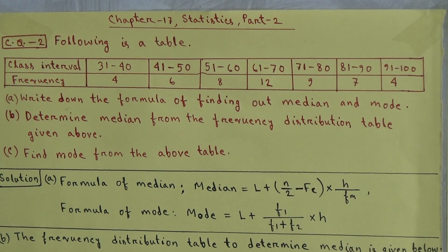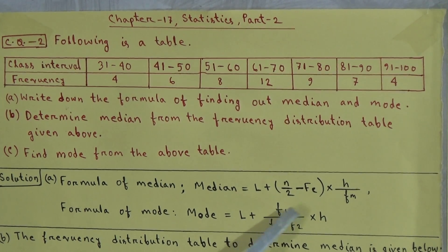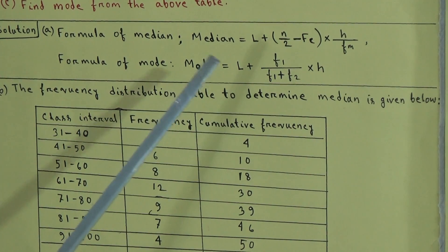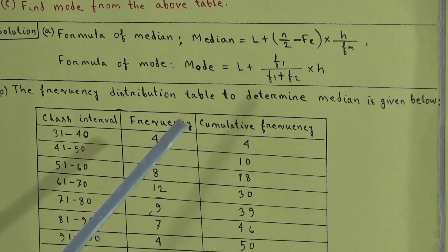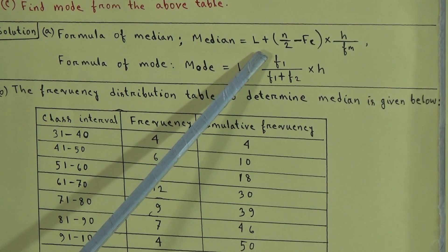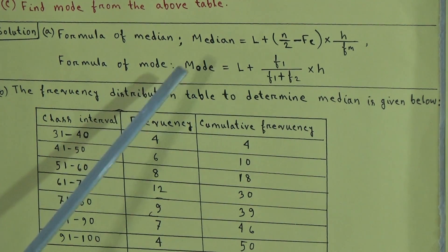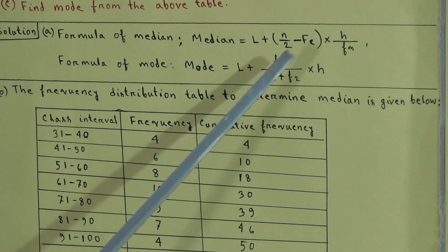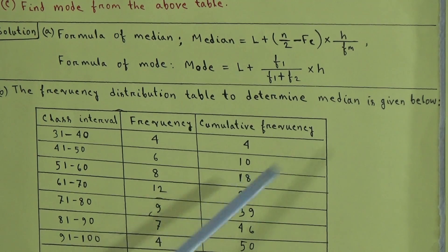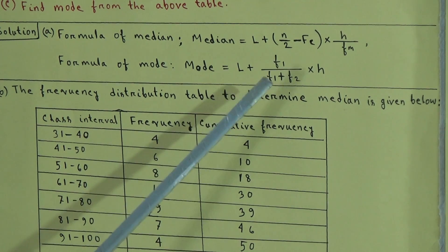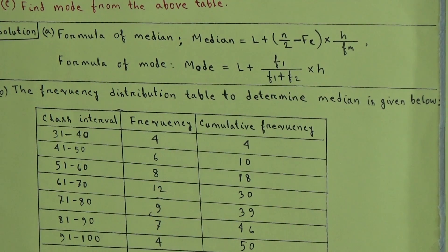At first we will solve A number question. We have to write two formulas — one for median and one for mode. The formula for finding median is: L plus (N by 2 minus Fc) into H divided by Fm. At the time of solving B number, we will discuss details about what is L, N, Fc, H, and Fm. The formula for mode is: L plus F1 by (F1 plus F2) into H. We will discuss L, F1, F2, and H when solving C number.